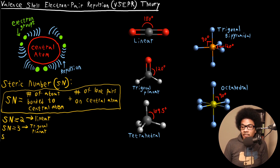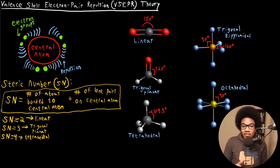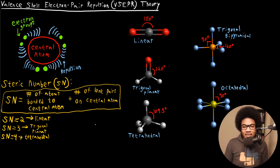Moving on — if you have a steric number of four, that's going to be tetrahedral. An example of tetrahedral geometry is methane, CH4. These bonds are going to orient themselves where the bond angle is 109.5 degrees all around, minimizing the electron repulsion between the different groups.